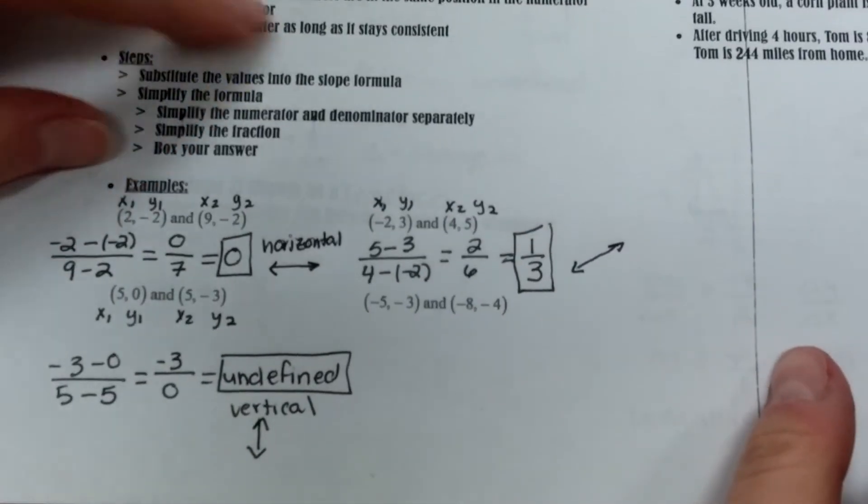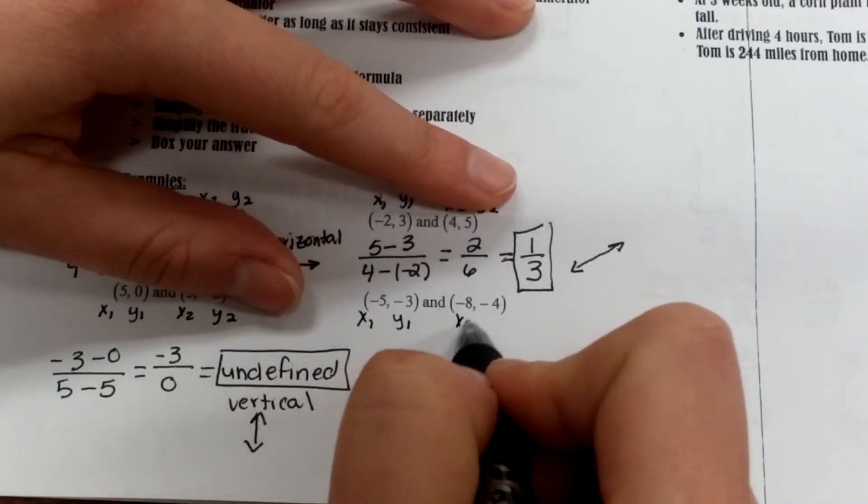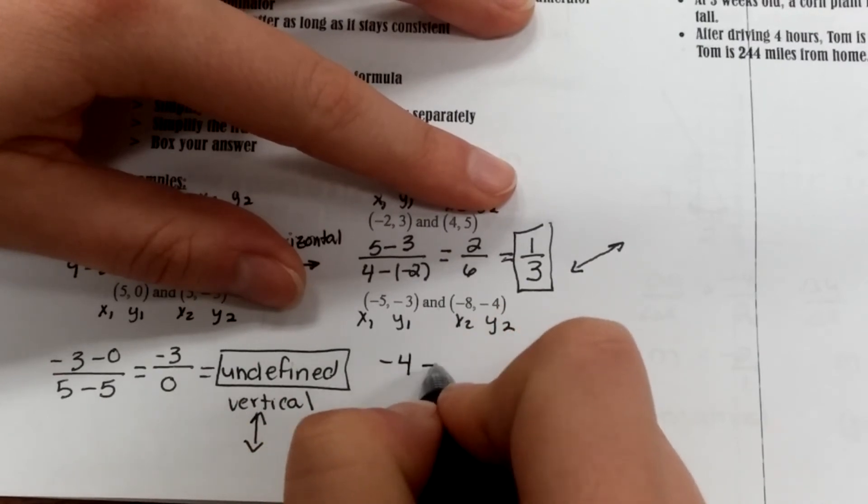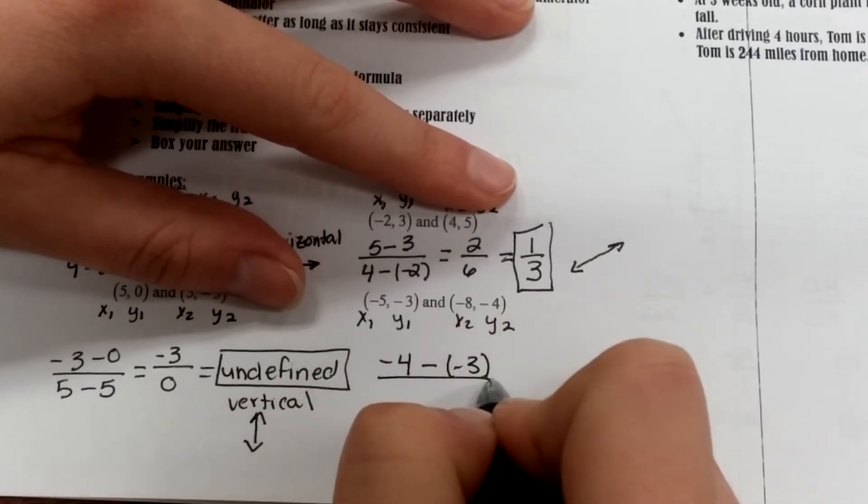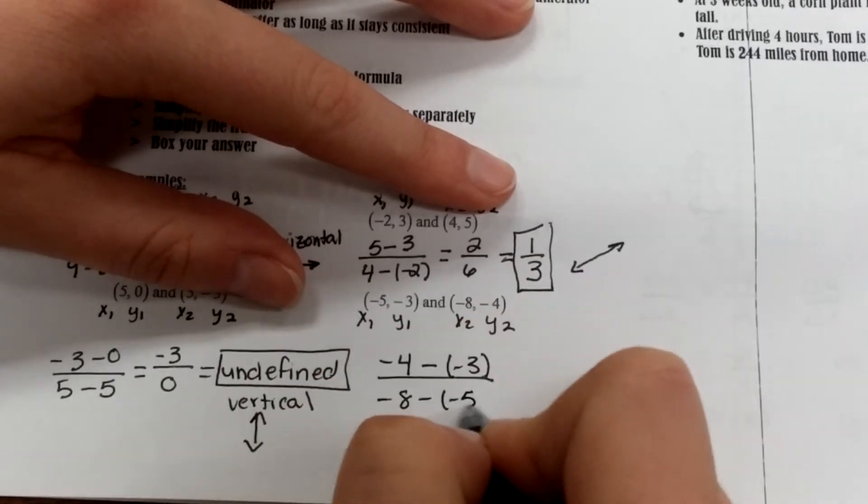Last example for slope from points. Again, I'm labeling x1, y1, x2, y2. So y2 is negative 4, minus y1 is negative 3, over x2 is negative 8, minus x1 is negative 5.